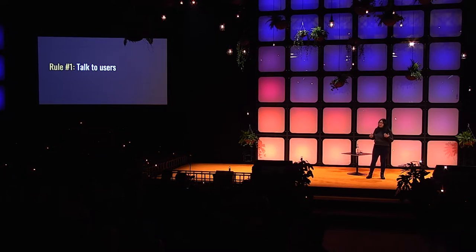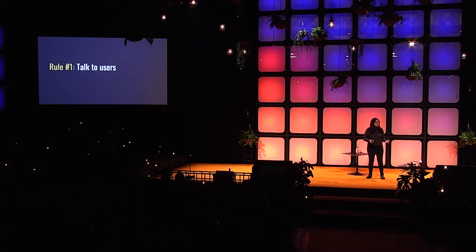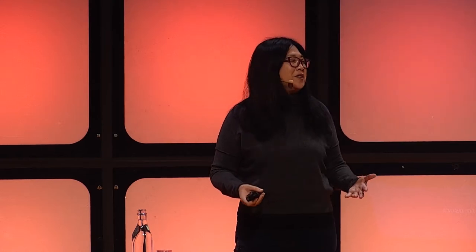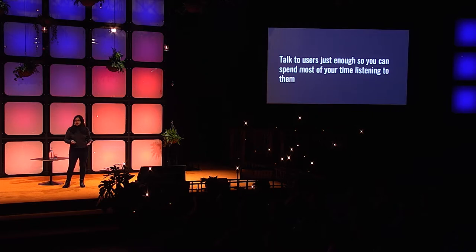Rule number one in talking to users: you actually have to get out of your chair and talk to users. This is one of the two things we repeat over and over at Y Combinator — you have to get out from behind your screen, stop writing code, and start talking to users. Code is so much easier to manipulate than people. The secret is to talk just enough so you can spend most of your time listening.